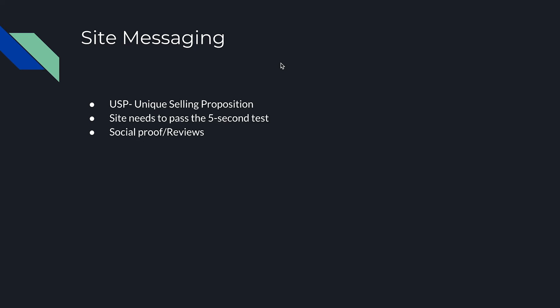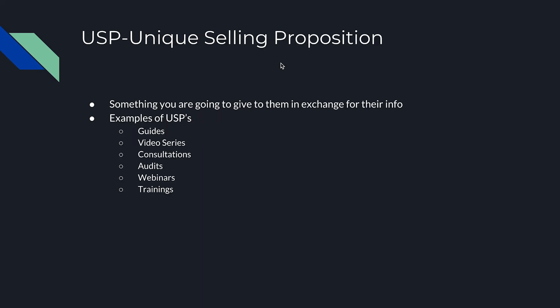Now let's talk about site messaging. I call it the USP — the unique selling proposition. This is something you give them in exchange for their information. Examples of USPs include guides, video series, consultations, audits, webinars, and trainings — free things you offer in exchange for their contact info. Having a USP on your website is essential for collecting leads. Figure out what you need to offer your audience.